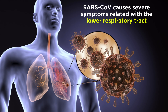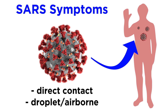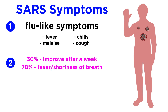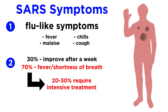Compared to all the coronaviruses we know about, SARS coronavirus infection usually causes severe symptoms related to the lower respiratory tract. When someone catches SARS, either through direct contact or by droplet or airborne routes, the patient typically has flu-like symptoms at first, such as fever, chills, malaise, and a cough. From there, about 70% of cases have a persistent fever or shortness of breath, while the other 30% start to improve after the first week. For those with persistent infection, about 20-30% of patients require intensive treatment like a ventilator, and severe cases can come on rapidly, progressing from cough to serious respiratory distress requiring intensive care.